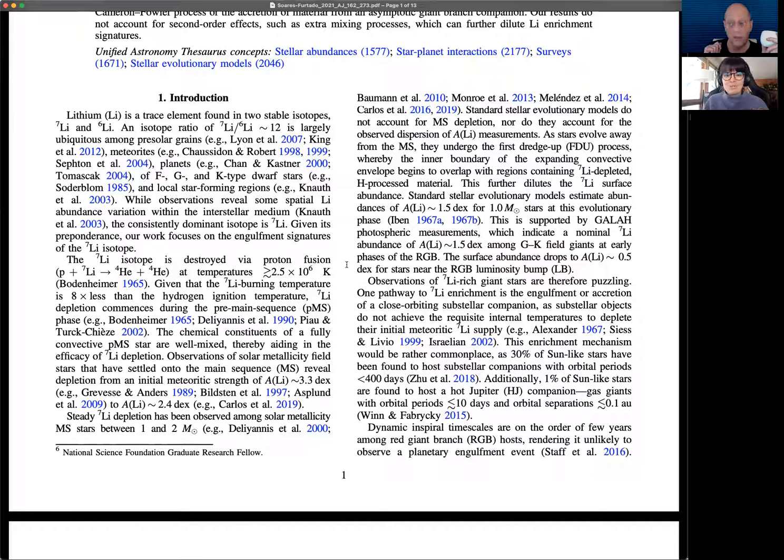I became very interested in looking at this using observational data. A data driven method to say what should constitute enrichment if we take stars of common masses and common evolutionary states, what sort of variance do you actually expect and what does five sigma really look like? It's obviously more nuanced than that 1.5 dex threshold.